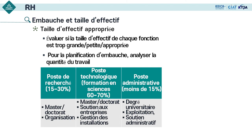Comment décidons-nous de la taille d'effectif approprié ? Nous avons trois types de postes : recherche, technologique et administratif. Pour le poste de recherche, nous recrutons ceux qui ont le diplôme de master ou doctorat. Nous calculons les heures de travail par an des employés existants. Par exemple, si 5 personnes dans une division travaillent chacune 2000 heures mais ne doivent travailler que 1800 heures selon la loi du travail, il y a un surplus de 1000 heures selon lequel nous pouvons recruter un nouvel employé.